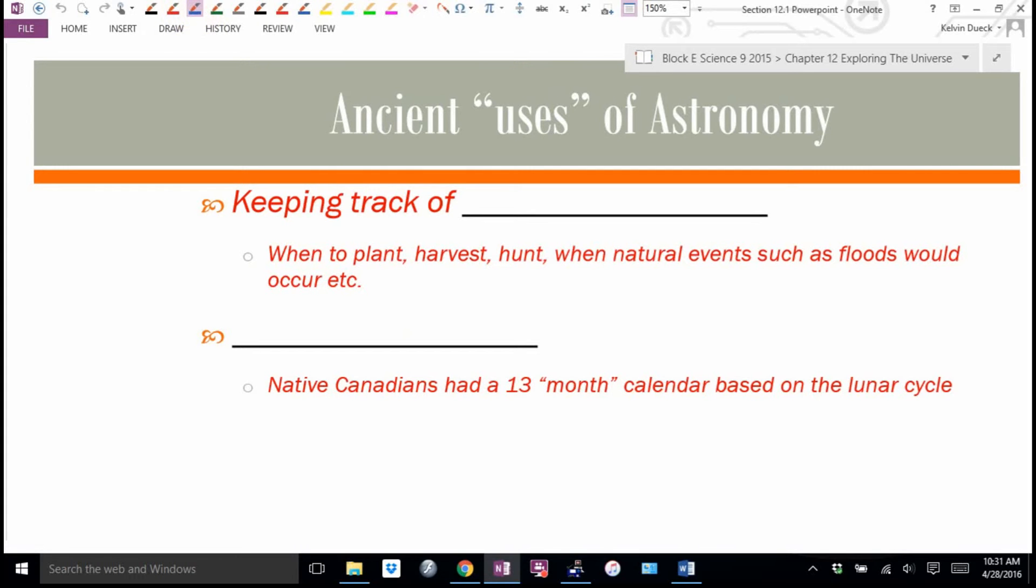Well, the first thing that we used to do was we used to keep track of the seasons. That was hugely important. When to plant, when to harvest, when to hunt. Even before we were planting, when we were still chasing animals, you need to know, for example, when caribou herds were migrating, when there was going to be good hunting. When natural events, such as floods, would occur. When the weather gets warmer, rivers get higher because snow melts.